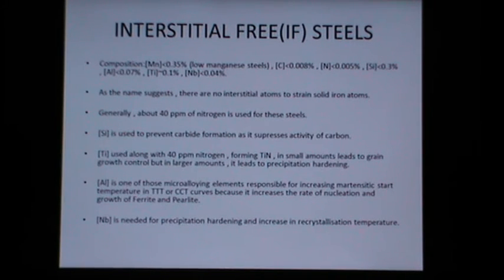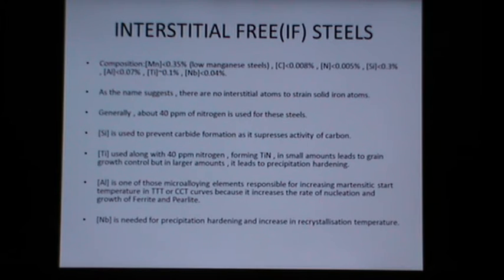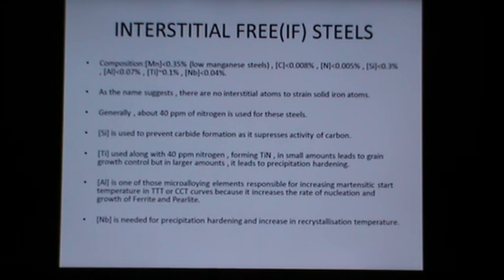Now let us discuss the role of various micro-alloying elements in the interstitial free steels. Silicon is required to prevent carbide formation, as it suppresses the activity of carbon. Titanium, used along with 40 ppm nitrogen thereby forming titanium nitride, leads to grain growth control in small amounts and precipitation hardening in larger amounts.